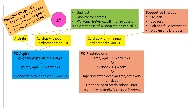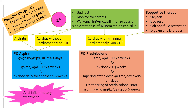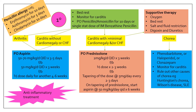The anti-inflammatory treatment of acute rheumatic fever comprises either aspirin or prednisolone. If the patient presents with chorea, the drugs are different: give phenobarbitone, haloperidol, or clonazepam, monitor for carditis, and rule out other causes of chorea such as Huntington's disease, Wilson's disease, and SLE.